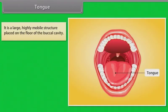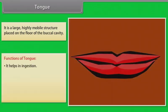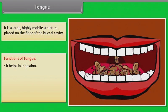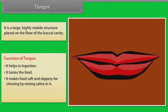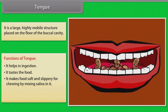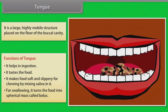The tongue is a large, highly mobile structure placed on the floor of the buccal cavity. It helps in digestion, tastes the food, and makes food soft and slippery for chewing by mixing saliva with it. For swallowing, it turns the food into a spherical mass called a bolus.